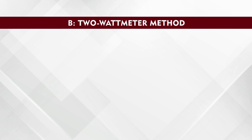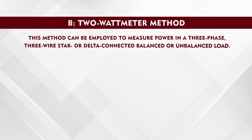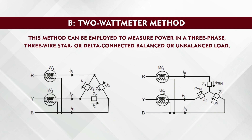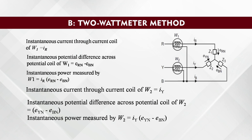The second method is the 2-wattmeter method. This method can be employed to measure power in a three-phase three-wire star or delta connected balanced or unbalanced load. In this method, the current coil of the wattmeters are connected in any two lines, say R and Y, and the potential coil of each wattmeter is connected across the same line and the third line, that is the B line, as shown in the figure. The instantaneous current through the current coil is assumed to be I_R.